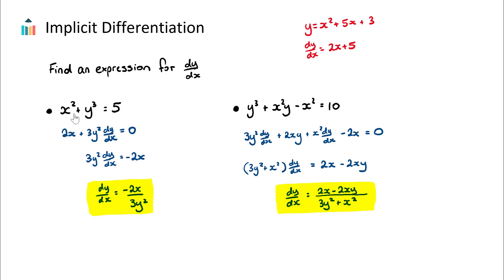We get dy/dx equal to negative 2x over 3y². With this relation we can draw a graph, and we know this is the expression for dy/dx. So if we are ever given a point — an x, y coordinate — we can substitute it in to find the slope, which is the gradient at that point.